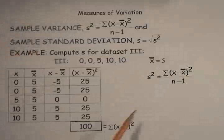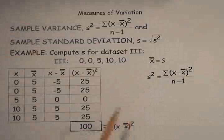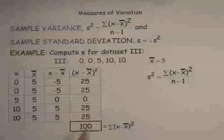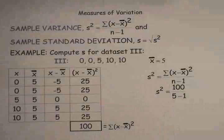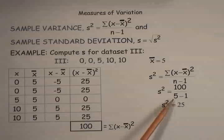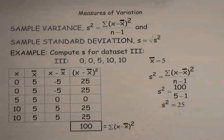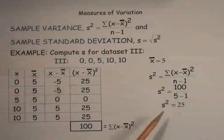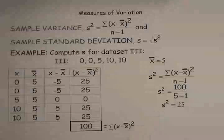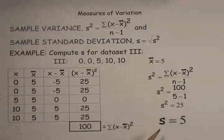That 100 is the sum of the squared deviations and is the numerator of the sample variance. Now write down the formula for sample variance and plug in your numbers: the numerator is 100, N is five, so the denominator is five minus one, which is four. 100 divided by four is 25. But remember, we were looking for S, not S². So the final step is to take the square root. The sample standard deviation for data set three is five.